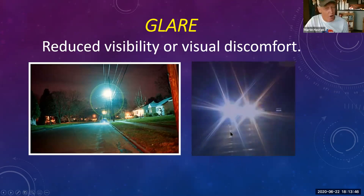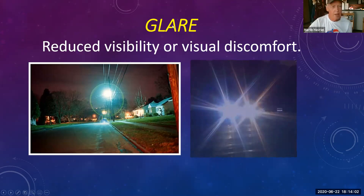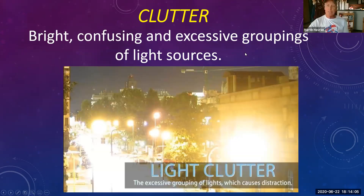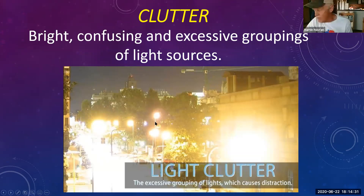Some newer vehicles have automatic dimming — IntelliBeam — so if your vehicle detects another vehicle coming, it automatically lowers the high beams. I'm looking forward to when all vehicles have that. The last example of light pollution is clutter: bright, confusing, and excessive groupings of light sources. This metropolitan area shows a public works department that installed so many intense, unshielded street lights that the lighting is so intense you can't even see the road.